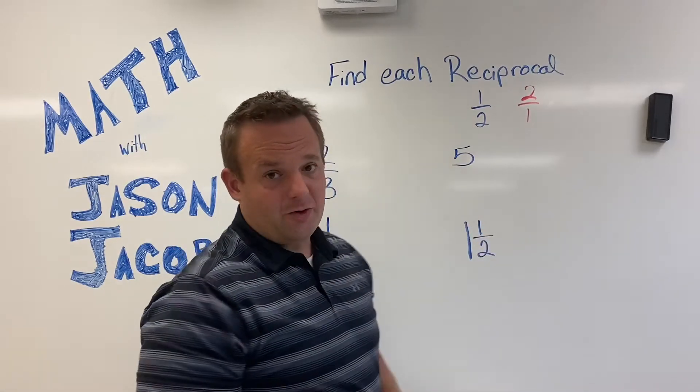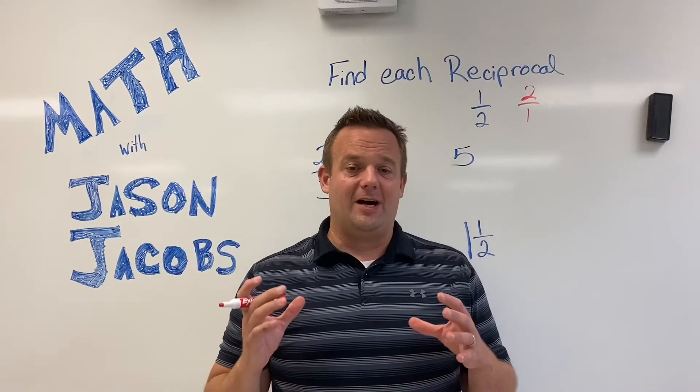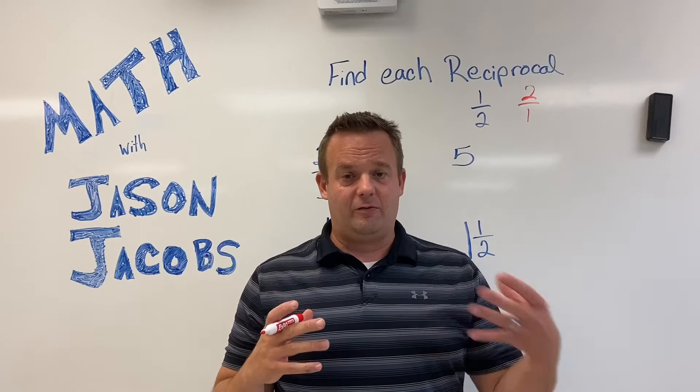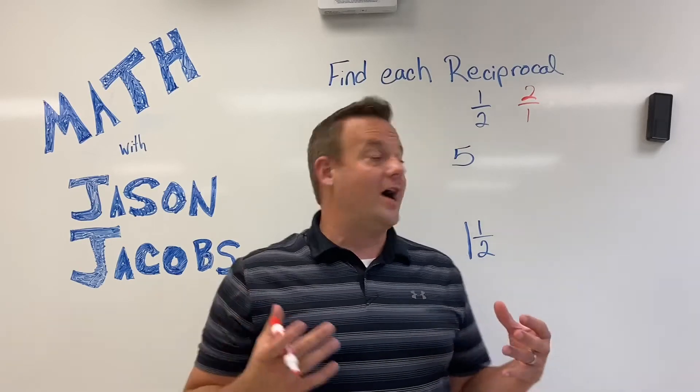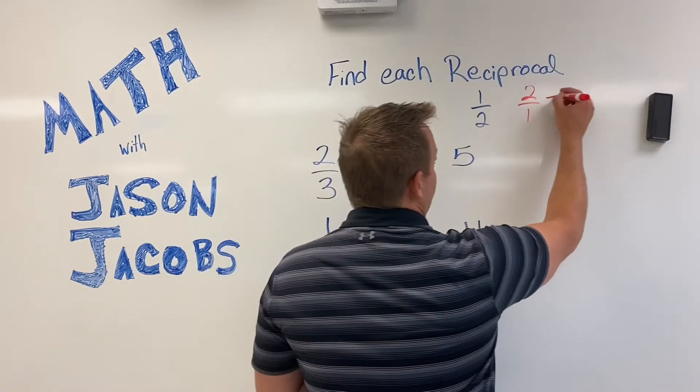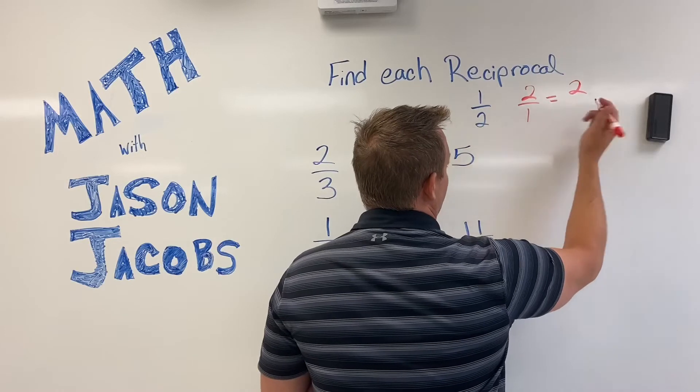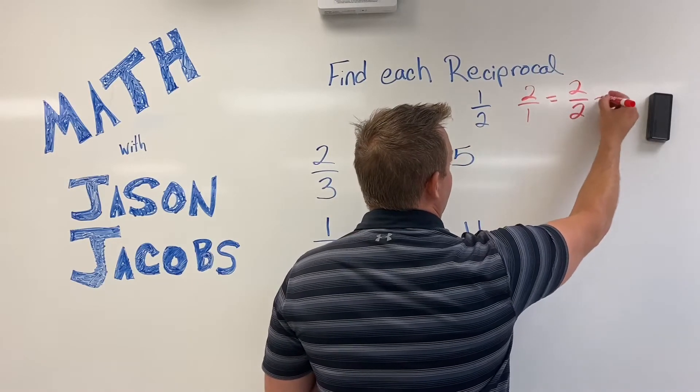And what a reciprocal means would be the product of a reciprocal would equal one. So, one times two is two, and two times one is two, and two over two equals one.